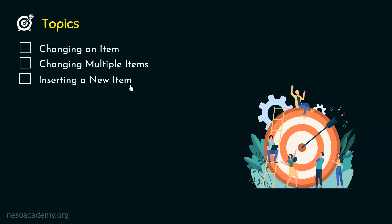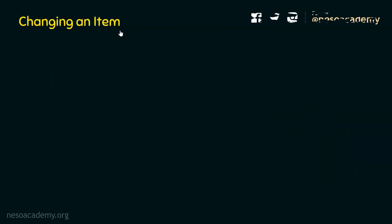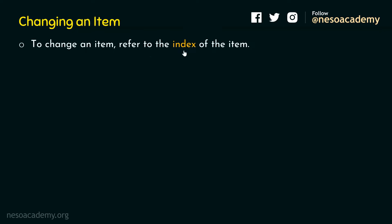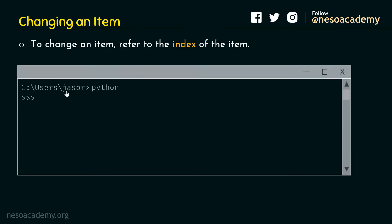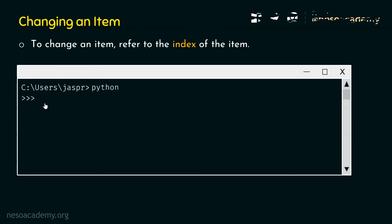Let's first understand how to change an item of a list. We can change an item of a list by referring to the index of that specific item which we want to replace. For example, let's open our command prompt and activate the Python interactive shell.